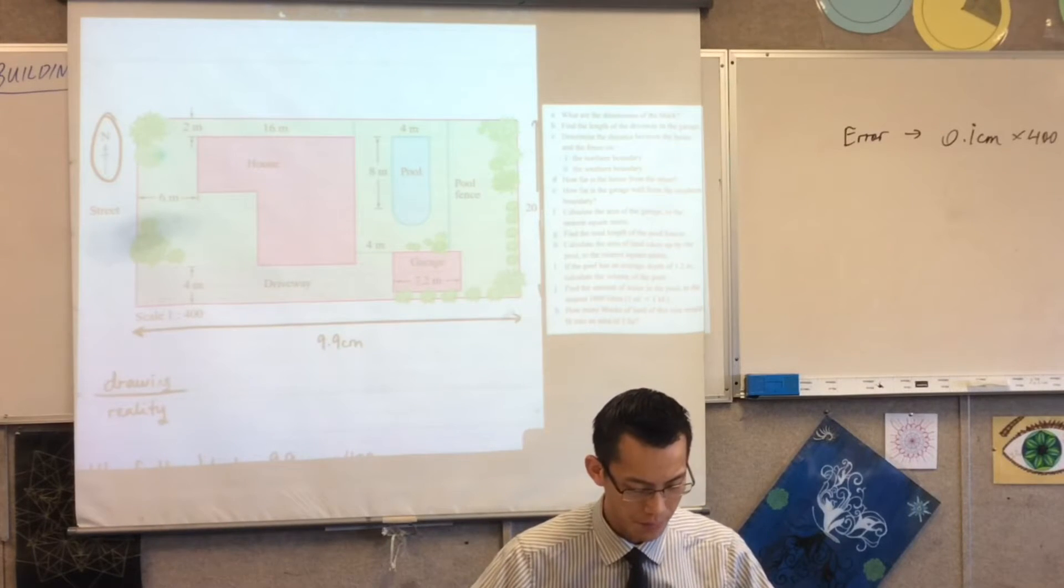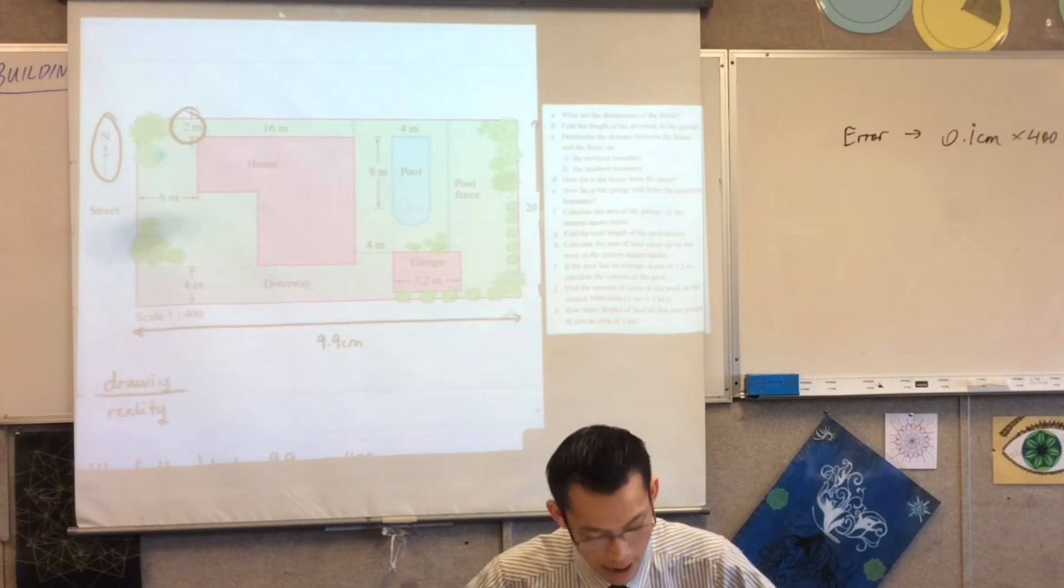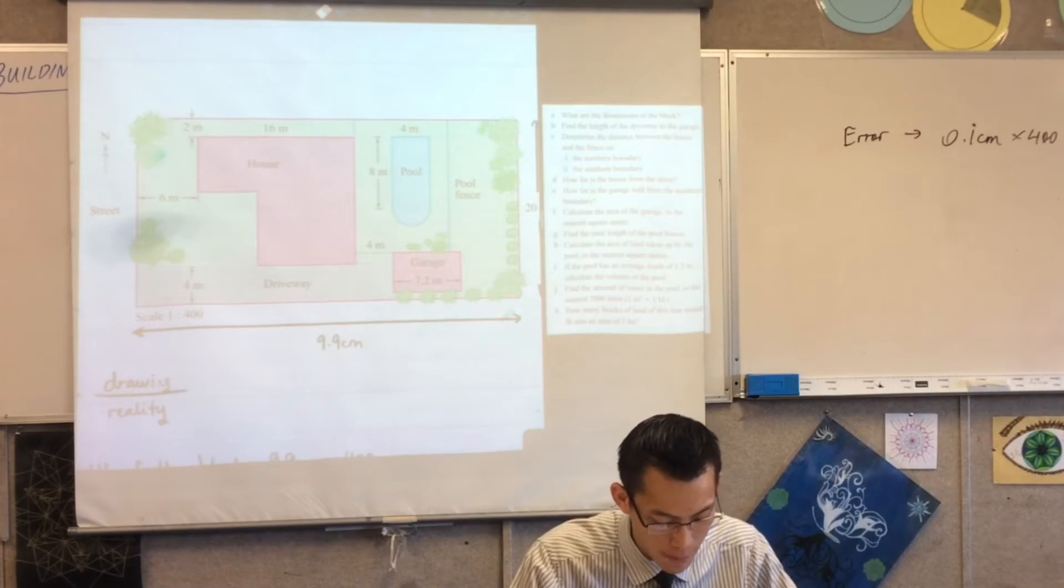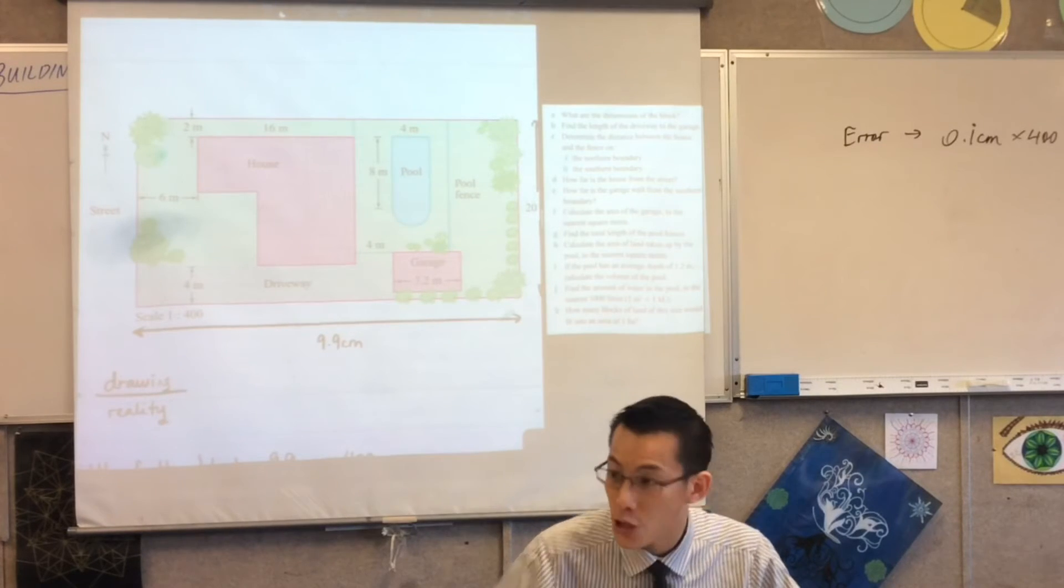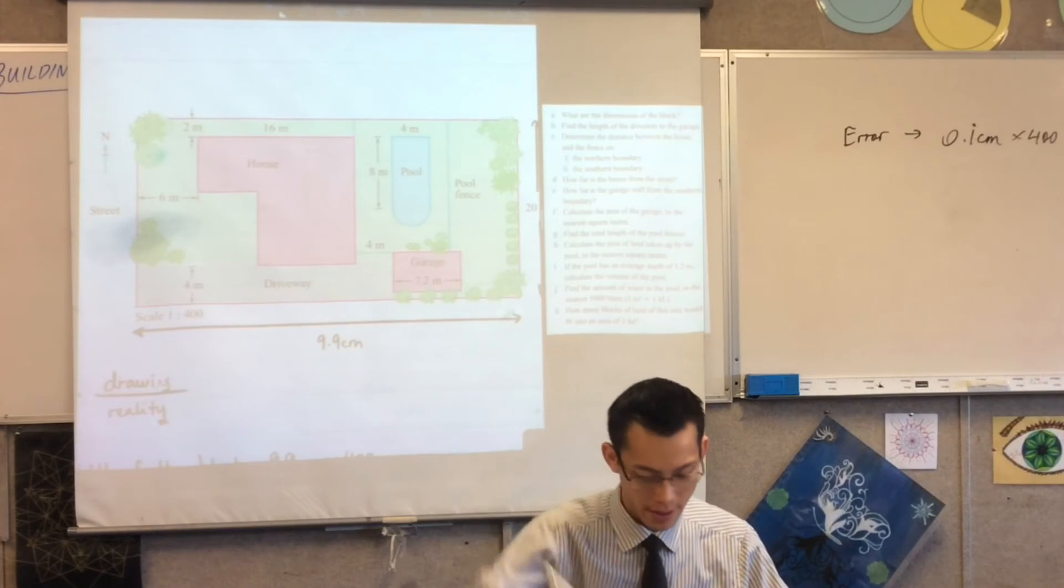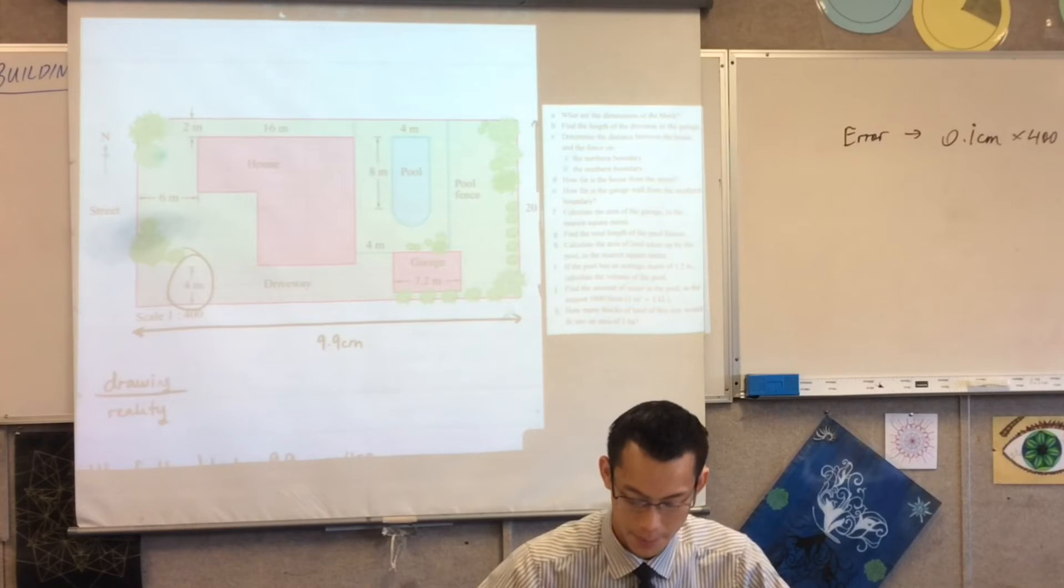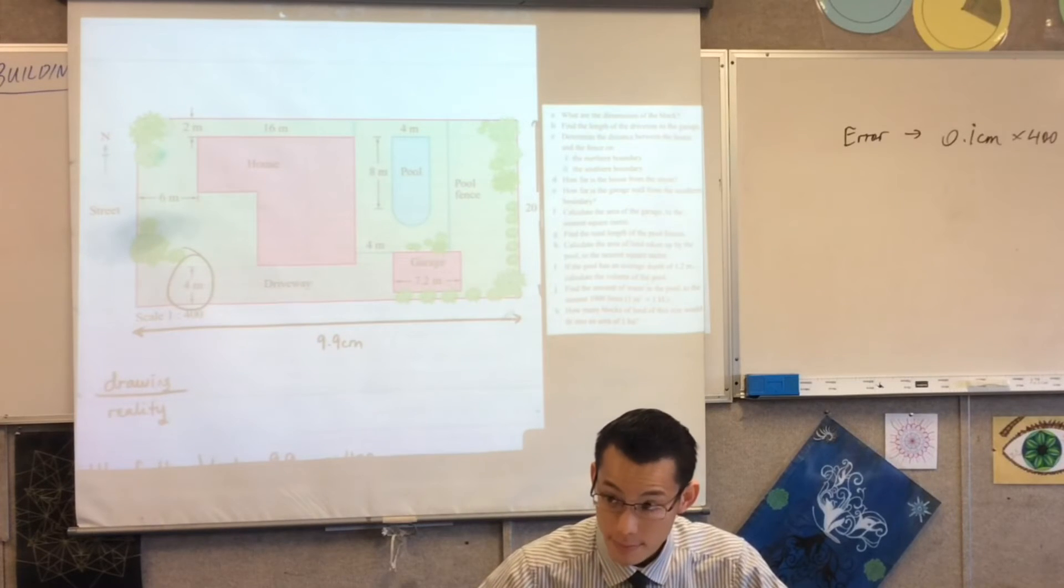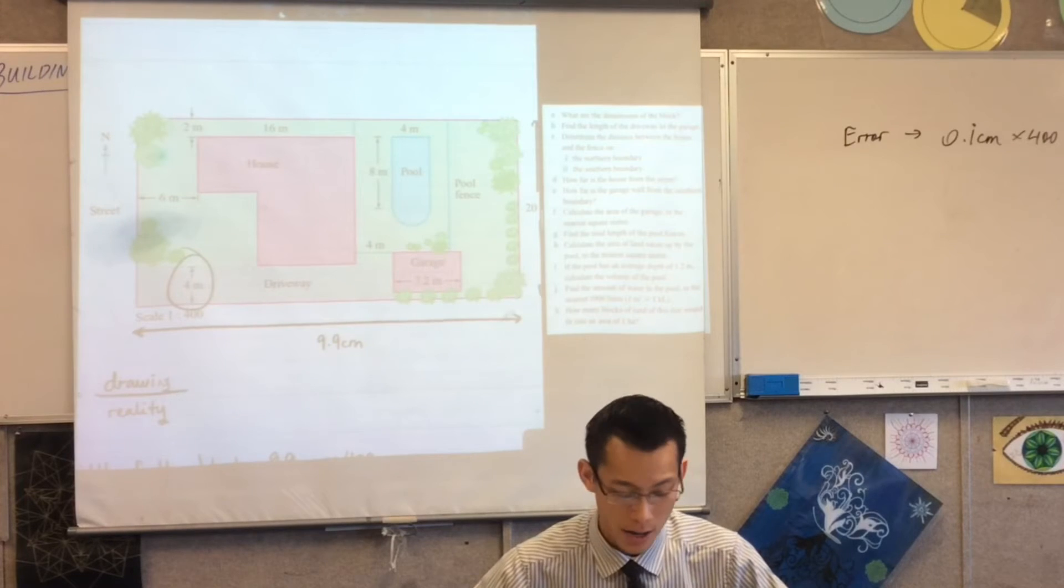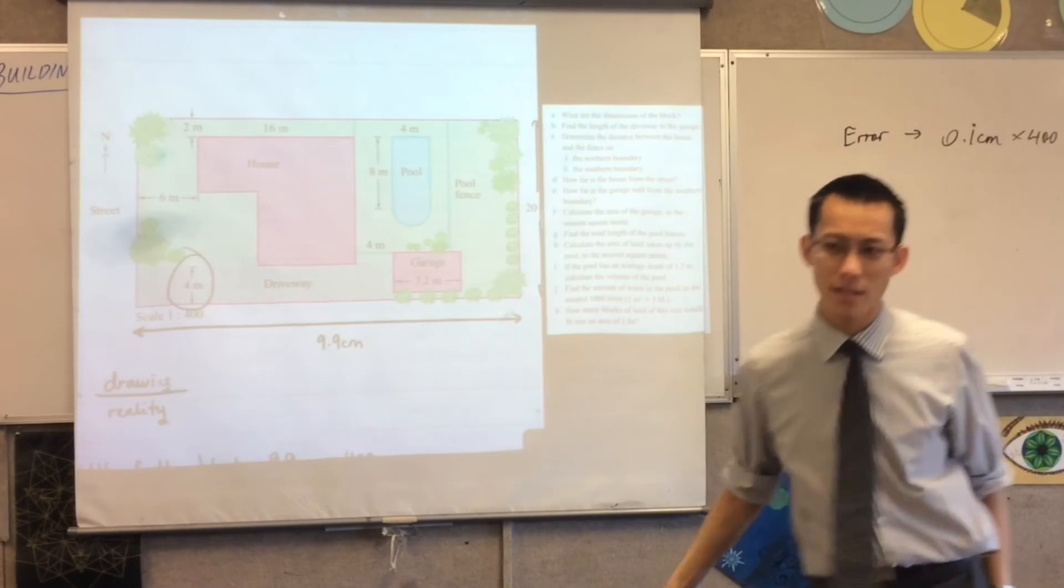The first one on the northern boundary is two meters so you can just state that. Part C part one: two meters. For part C part two, the driveway width between the southern boundary and the fence: four meters.